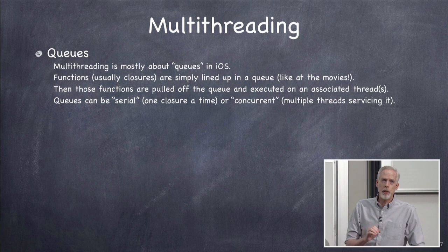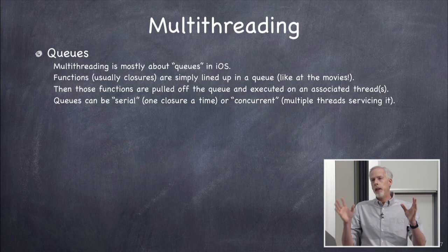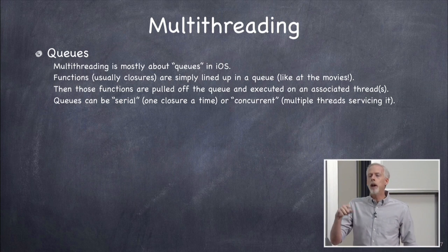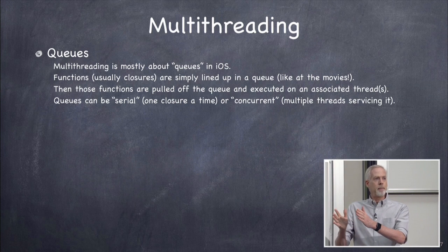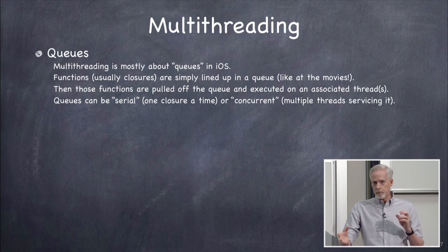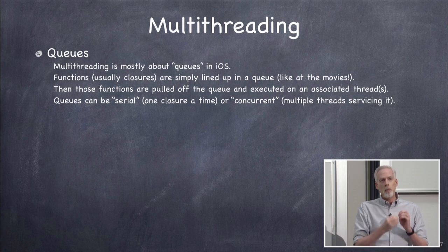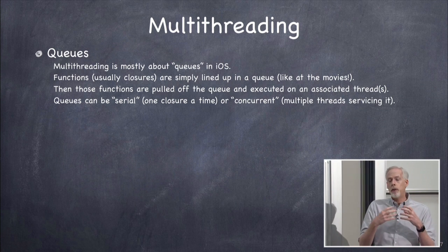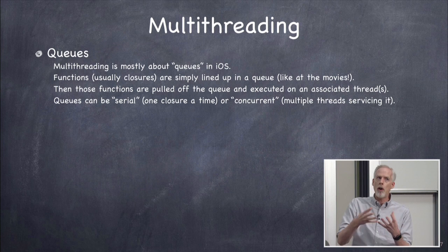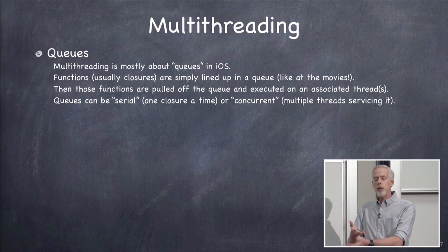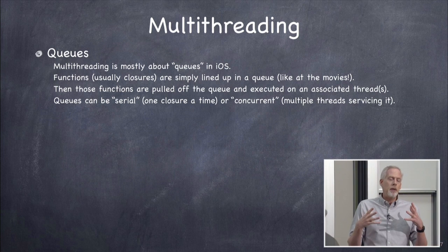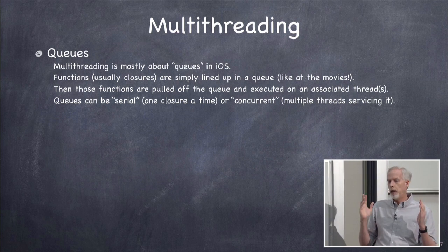Does everyone know what a thread is? A thread - short for thread of execution - is the process through which code is executing, which could be separated into multiple concurrent threads. In iOS, you have an important main thread of execution that's listening to gestures and doing drawing. Then you can have other threads doing background things like going out onto the network and getting data. Most devices have multiple cores, so they can actually do two things at once.